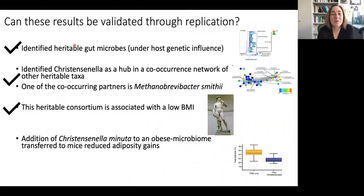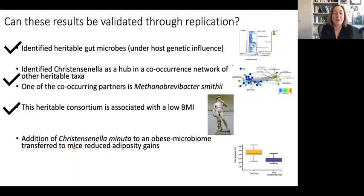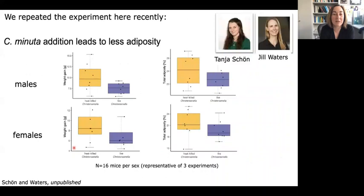So we've seen the same heritable gut microbes appear in other studies. We've confirmed Christensenella co-occurring with Methanobrevibacter, associated with low BMI again and again. We also confirmed the adiposity-reducing effect in Germany with a new setup — 16 mice per sex, three independent replicates, males and females. Whenever Christensenella is added live, we get mice that are on average smaller and less fat.